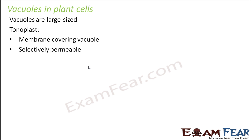When you talk about plant cells, vacuoles are always large-sized, and there is a membrane called the tonoplast which covers the vacuole. This tonoplast is not noticeably seen in animal cells. In plant cells, this tonoplast membrane is selectively permeable, just like the plasma membrane - it doesn't allow anything and everything to pass through, since such a large vacuole is used to store important materials and you cannot allow any substance to freely enter it.